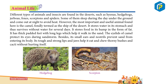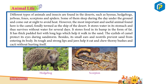Animal Life: Different types of animals and insects are found in the deserts such as hyenas, foxes, scorpions, and spiders. Some of them sleep during the day under the ground and come out at night to avoid heat. However, the most important and useful animal found here is the camel.